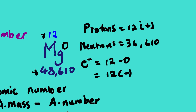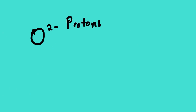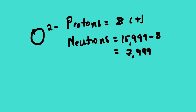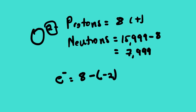Let us look at an example where we are dealing with ions. We will find the number of protons, neutrons, and electrons for oxygen. To find protons, we know protons equal the atomic number, which is 8. For neutrons, we use atomic mass minus atomic number. For electrons, we use atomic number minus the charge. The charge here is negative 2, so don't forget the bracket: electrons = 8 minus (negative 2) = 10.